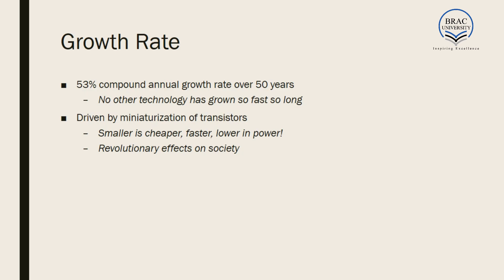Why do we have to learn this course? What are the advantages and what is the scope of the semiconductor industry? About 53% compound annual growth has been found over the last 50 years — semiconductor technology is the fastest growing technology in the world, no other technology has grown so fast. It is driven by miniaturization, trying to make everything small. When sizes are smaller, less material is required, chips will be cheaper, they will be faster because current has to pass a shorter path, and power will be lower. So we get smaller things at a cheaper price that act faster.